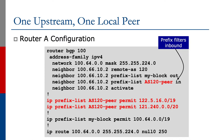Let's look at the Router A configuration. Router A connects to the local peer. As with all BGP sessions to other autonomous systems, we have inbound and outbound filters. The outbound filter, my block, lets my prefixes out to the local peer. And the prefix list AS120peerIn only accepts their prefixes that they originate into your network.